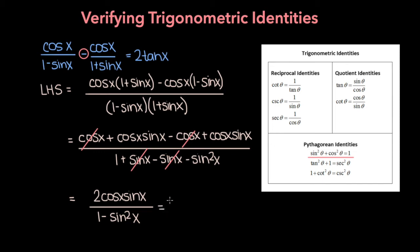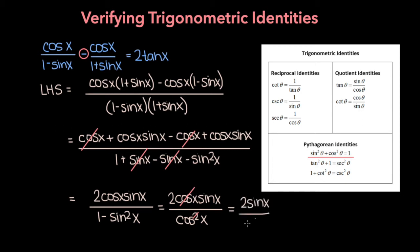So we can rewrite this fraction as 2 cosine x sine x over cosine squared x. Now we can cancel the cosine in the numerator with one of the cosines in the denominator, and we're left with 2 sine x over cosine x, which of course is equal to 2 tangent x, because sine x over cosine x is equal to tangent. And so we proved that the left-hand side equals the right-hand side, and we've verified this trig identity.